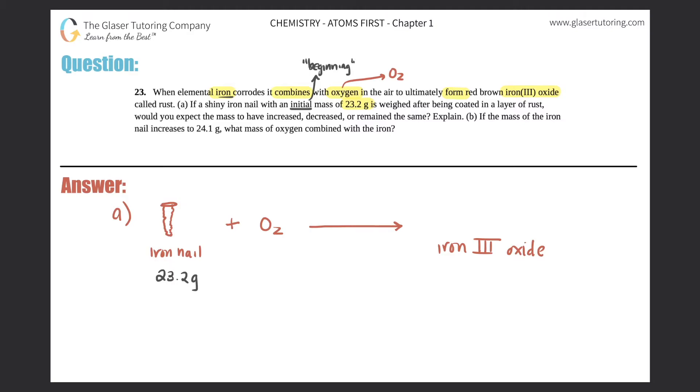You don't need to know how to make these compounds just yet. It is only chapter one, but just know that iron-3 oxide is Fe2O3. And an iron nail, when they say elemental iron, that just means it's just the element. So this would just be Fe.